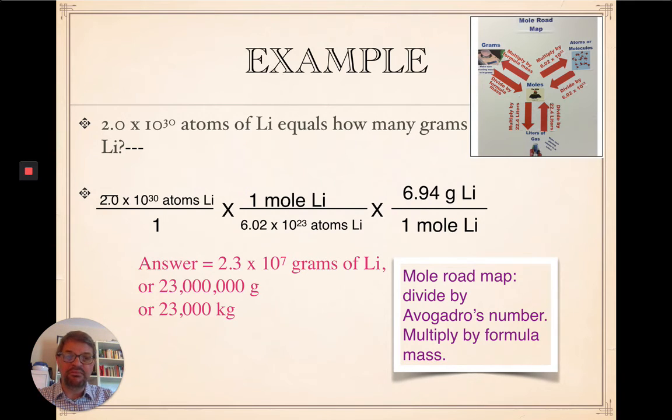Next step, then, going from moles to grams, you would multiply by formula mass. So, whatever number you get here in the first part, that first part, whatever you get, you would then multiply by 6.94 grams.